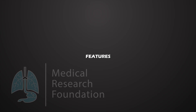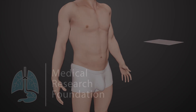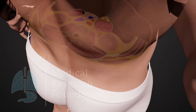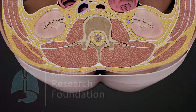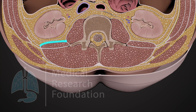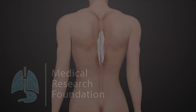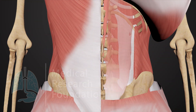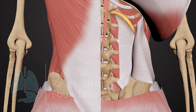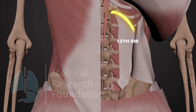Features. It consists of three strong layers — namely anterior, middle, and posterior — and fills in the gap between the 12th rib and the iliac crest.